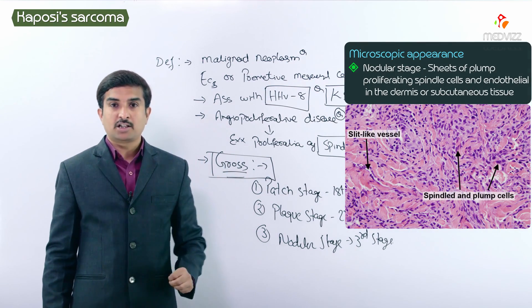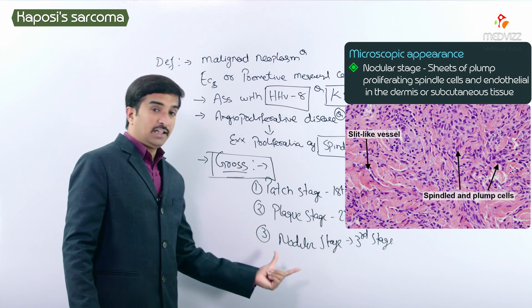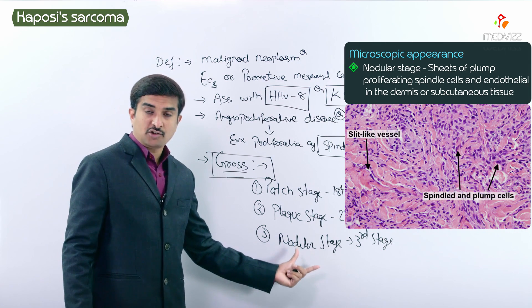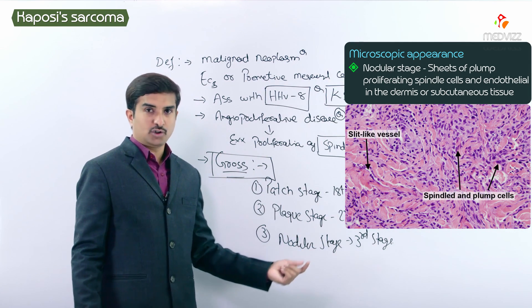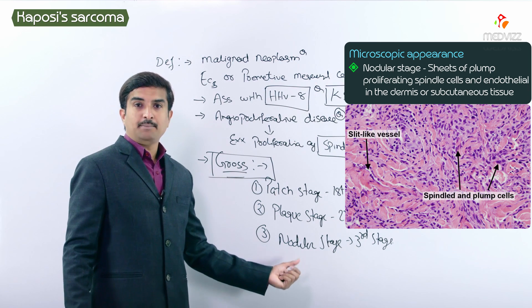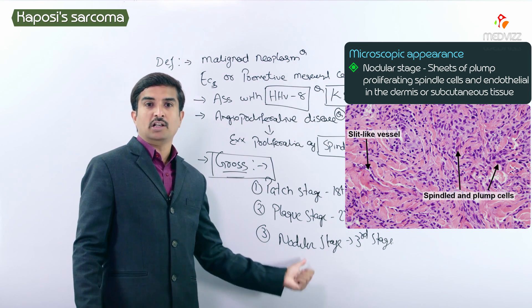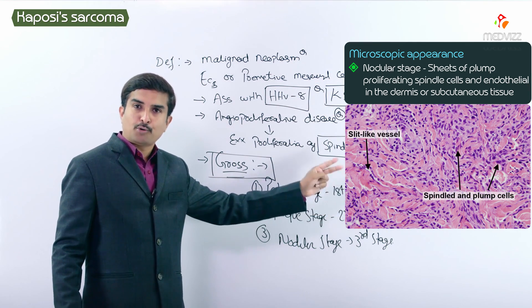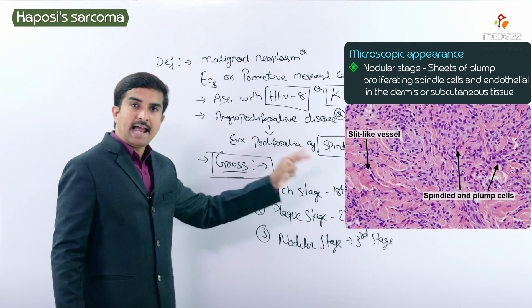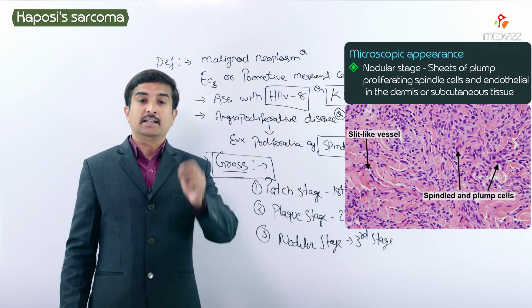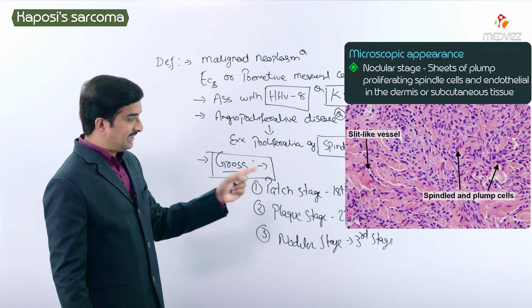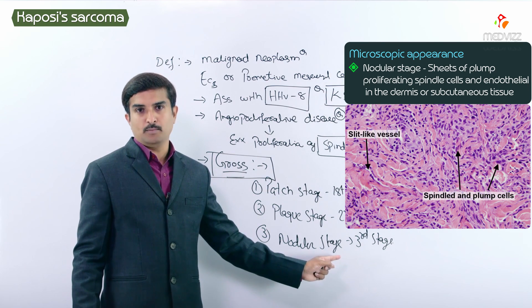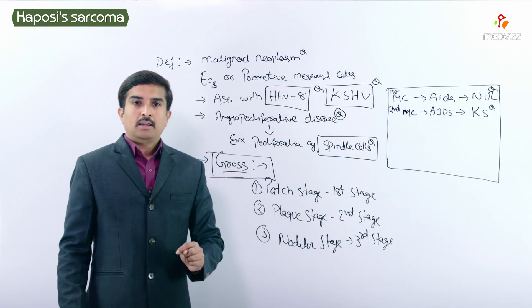The nodular stage is the most aggressive and final stage. Microscopically, the nodular stage shows sheets of plump proliferating spindle cells and endothelial cells in the dermis or subcutaneous tissue. This is the microscopic picture of the nodular stage of Kaposi sarcoma.